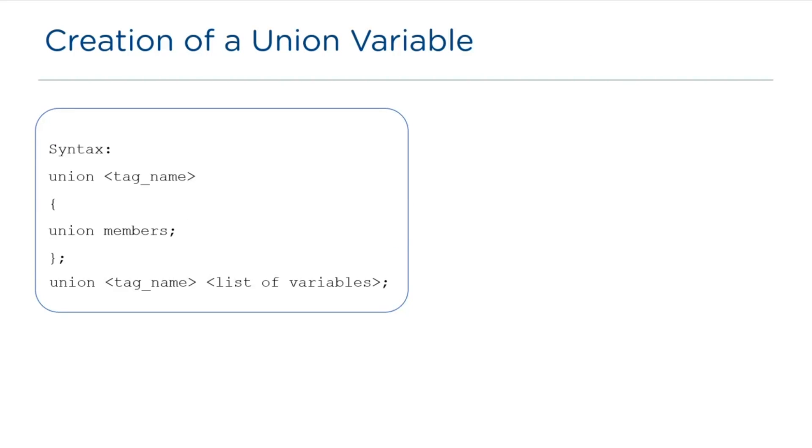Similar to the concept of structures in C, even in union, memory is allocated once the variable is created. And the union variables are created to access and assign the values of union members in C. The syntax to declare union variable is as given below: it starts with the keyword union, followed by tag name, then a list of union variables. For example, the keyword union, then tag name student, followed by the variable s1.